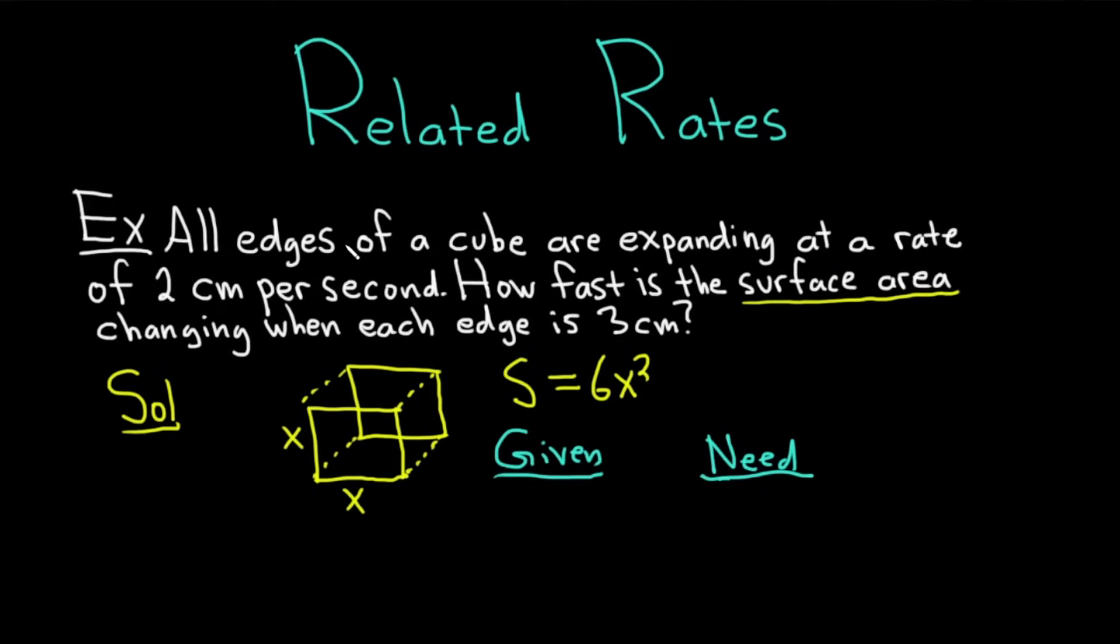Let's read it again. All edges of a cube are expanding at a rate of 2 cm per second. So we're given the rate of change of the edge, and it's expanding, so it must be positive. Since x is the variable we use to denote the edge, the rate of change of the edge is dx/dt. And we're told that it's equal to 2. And it's positive because it's expanding. If this was a magically shrinking cube or something, then it would be negative.